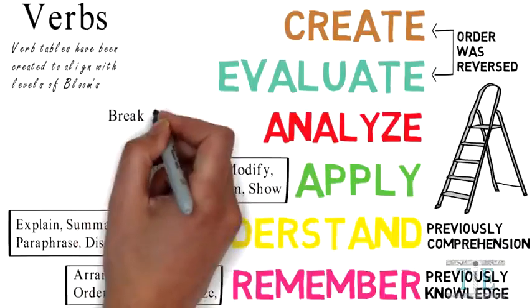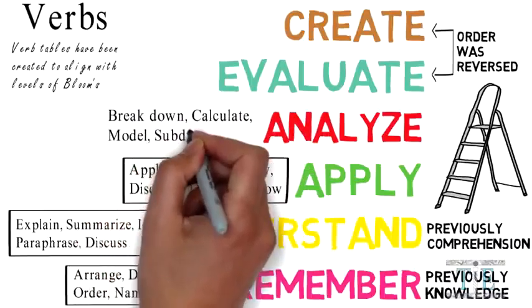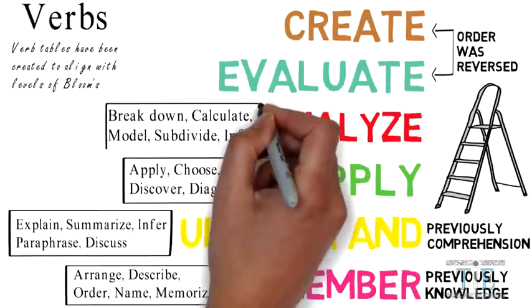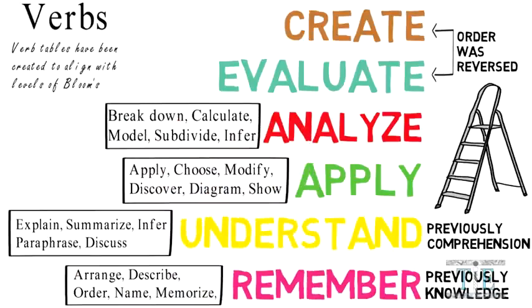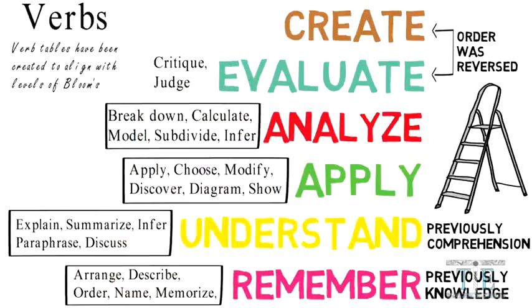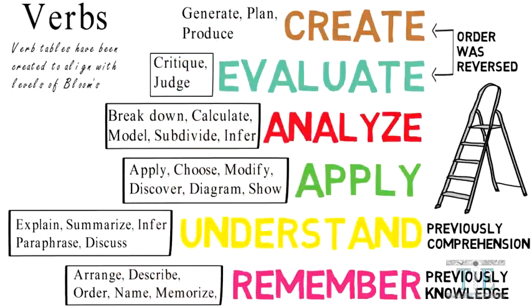Break down, calculate, model, subdivide, and infer are all aligned with 'analyze.' Critique and judge are aligned with the 'evaluation' level. And lastly, generate, plan, and produce are aligned with the top level of cognition, which is 'create.'